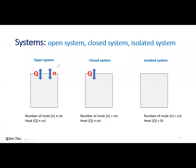We have three kinds of systems: open system, closed system, and isolated system. In the case of an open system, we can add and release a quantity of molecules — it's open, so N is not constant. We can also easily have an exchange of energy, so we have Q. In an open system we have both Q and N.